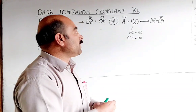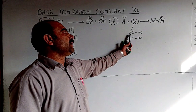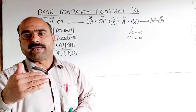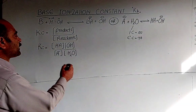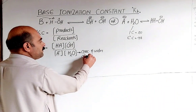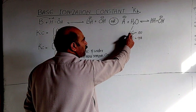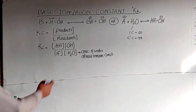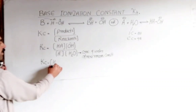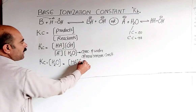The initial concentration of water is nearly equal to its equilibrium concentration. The water molecules are in such large number that their concentration does not decrease appreciably — it is negligible. Therefore, the concentration of water remains almost constant. Since the equilibrium constant and the concentration of water are both constant, they combine into a single constant.